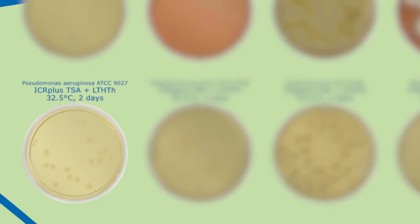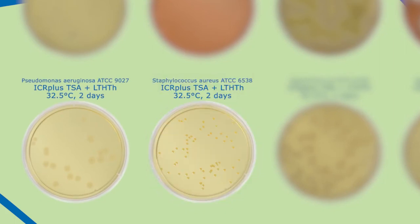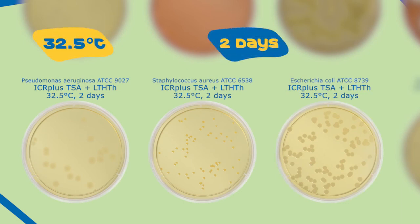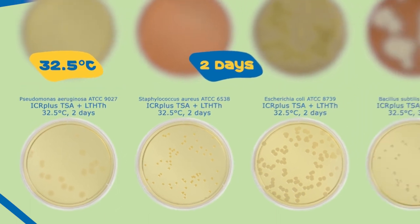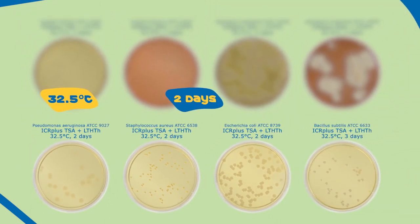The bacteria strains Pseudomonas aeruginosa, Staphylococcus aureus, and Escherichia coli grew on TSA at 32.5 degrees Celsius for 2 days, and Bacillus subtilis at the same temperature for 3 days.